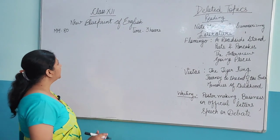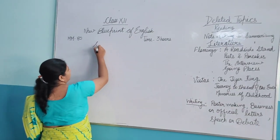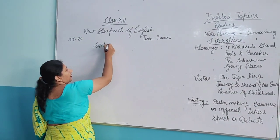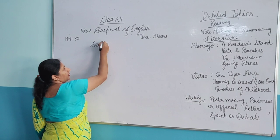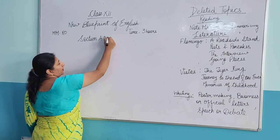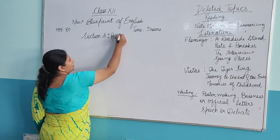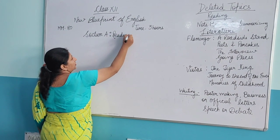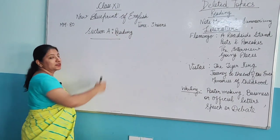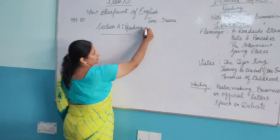Now let us start with Section A — Reading. The first section, Section A, is of 20 marks.